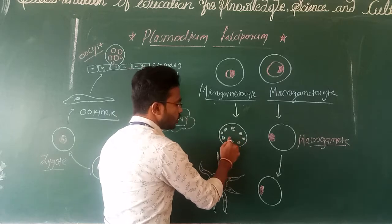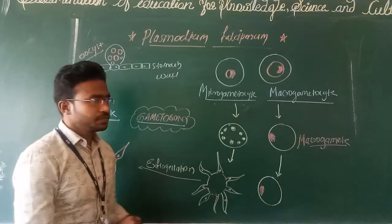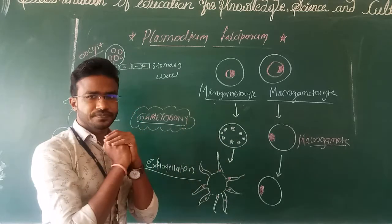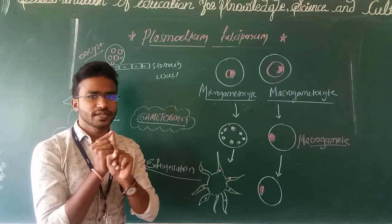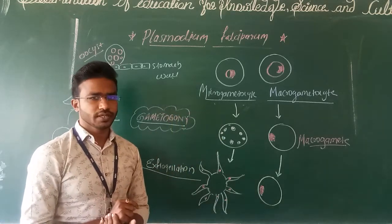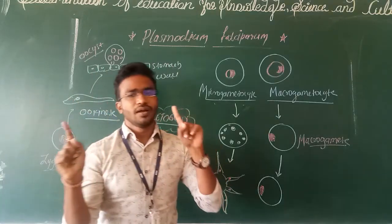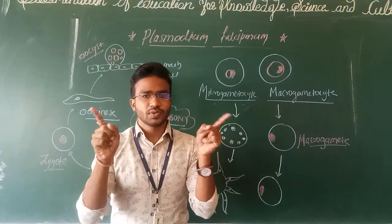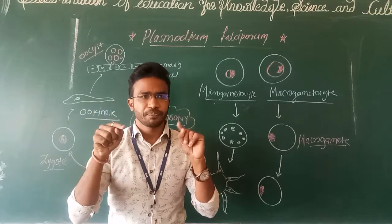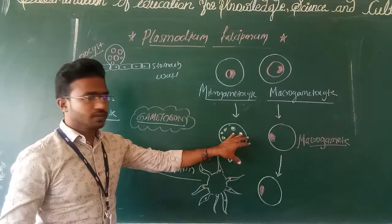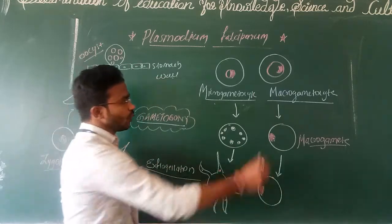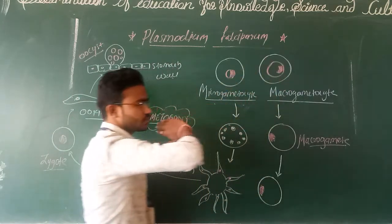In microgametocytes, which are the male gametocytes, the nucleus divides into 8 different nuclei. This forms a multi-nucleated cell — the nucleus is divided into 8 pro-nuclei. These pro-nuclei are called male and female gametes. In the case of microgametocytes, each nucleus moves to the periphery of the cell.